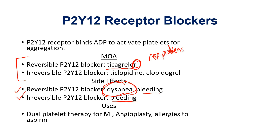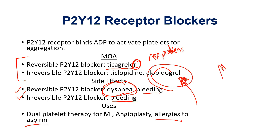What are the uses? Dual platelet therapy for MI — that's fairly high yield because when a patient has had an MI, you typically don't give just aspirin by itself; it's often accompanied by a P2Y12 receptor blocker. These are used fairly often, especially clopidogrel. The other really important thing: whenever a patient is allergic to aspirin, you jump to this category — the P2Y12 receptor blockers. In patients allergic to aspirin who need something that acts like aspirin, you give a P2Y12 receptor blocker, typically clopidogrel.